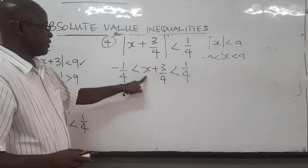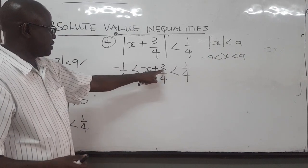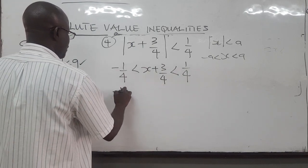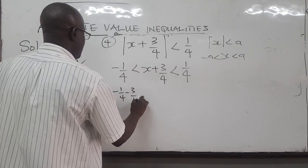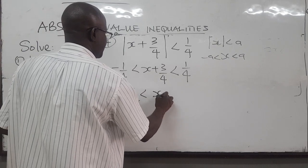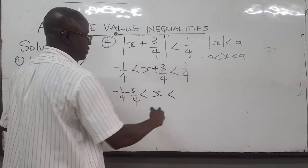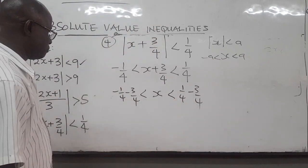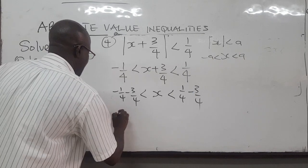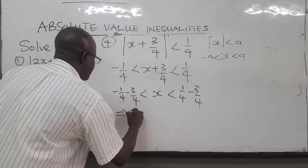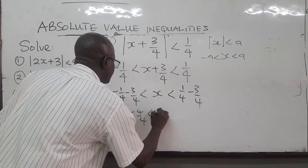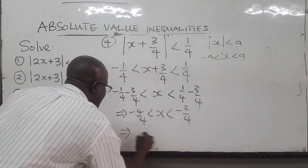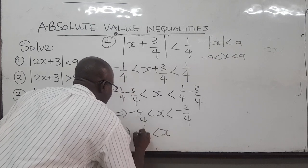We just solve for x by subtracting 3 over 4 from each part. On the left side we have negative 1 over 4 minus 3 over 4. On the right side we have 1 over 4 minus 3 over 4. The left side gives us negative 4 over 4, which is negative 1.